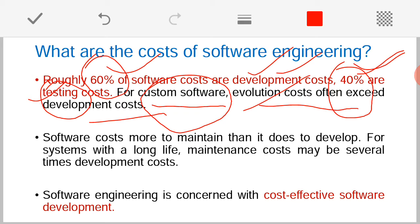The software has to undergo changes because our business processes are changing, our technology is changing, and our day-to-day life is also getting changed. Then automatically my software has to undergo change as well. Once the software has to undergo change, it has to be evolved — so automatically for evolution there will be more cost.